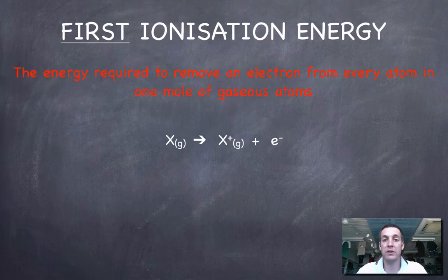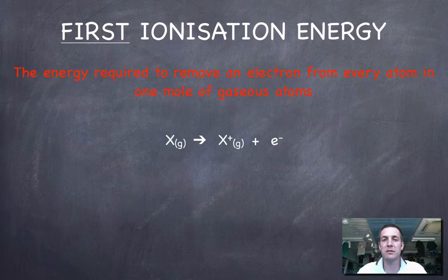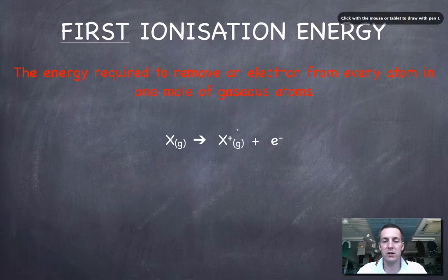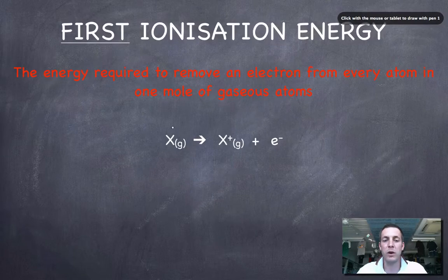We're going to talk about how first ionization energy varies across period three. It's the energy required to remove an electron from every atom in one mole of gaseous atoms. So we're forming gaseous one-plus ions from gaseous atoms — another way of defining this would be to say that we're forming one mole of gaseous one-plus ions from one mole of gaseous atoms. It's important that you can write equations for these things as discussed in the bonding topic.